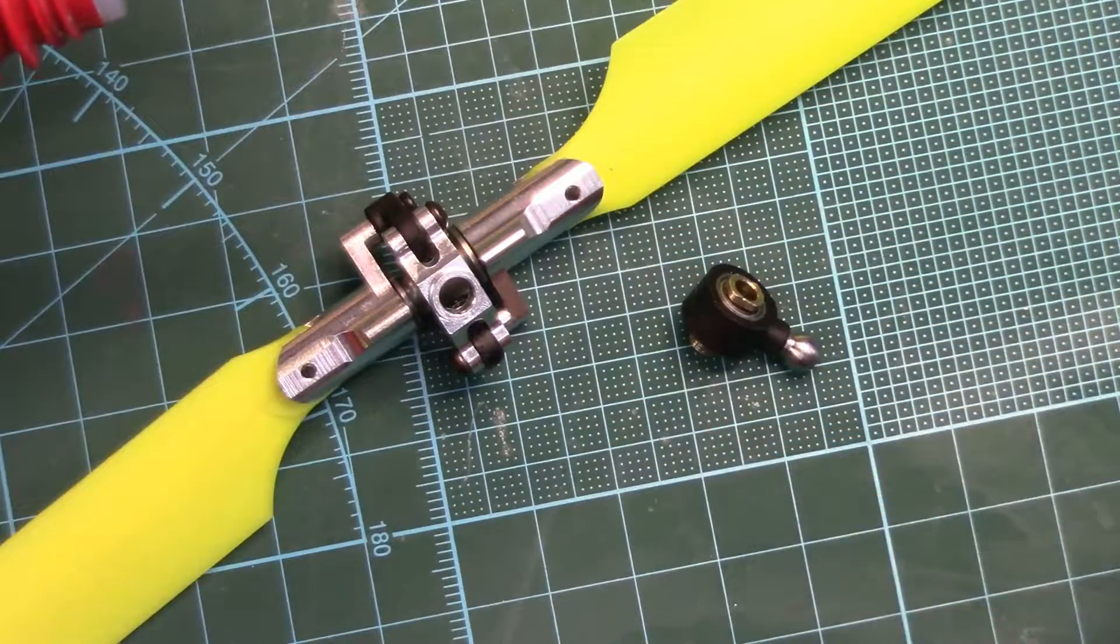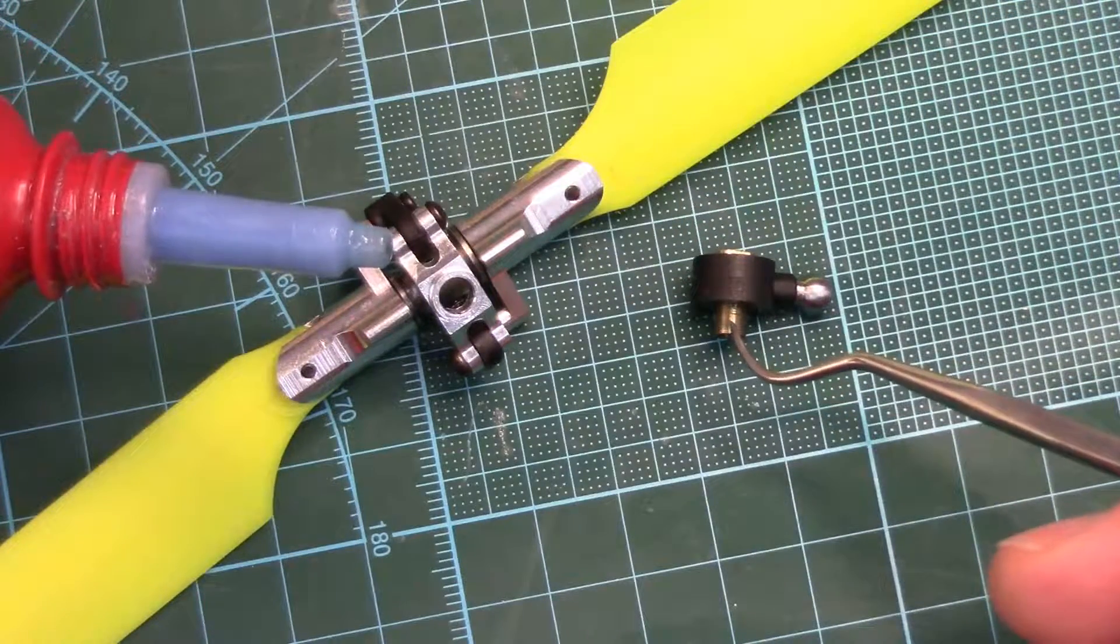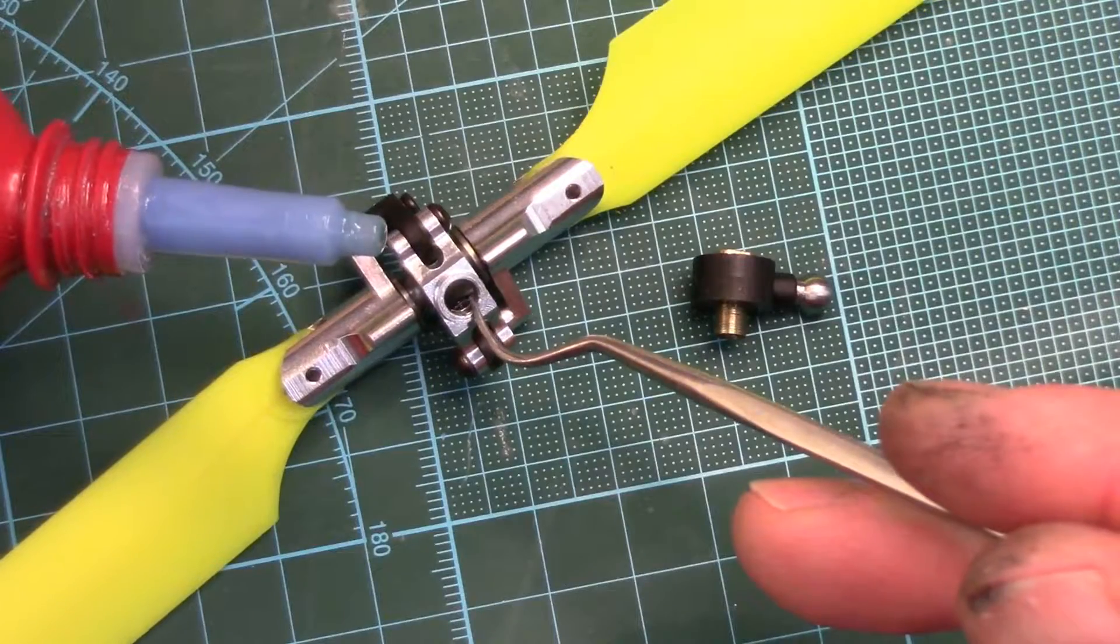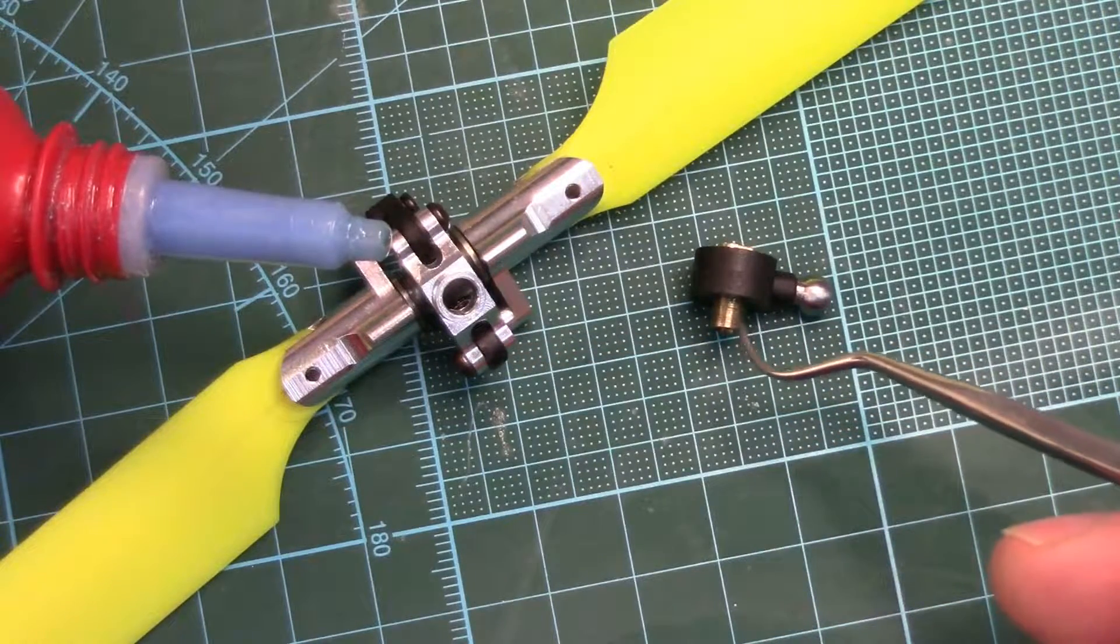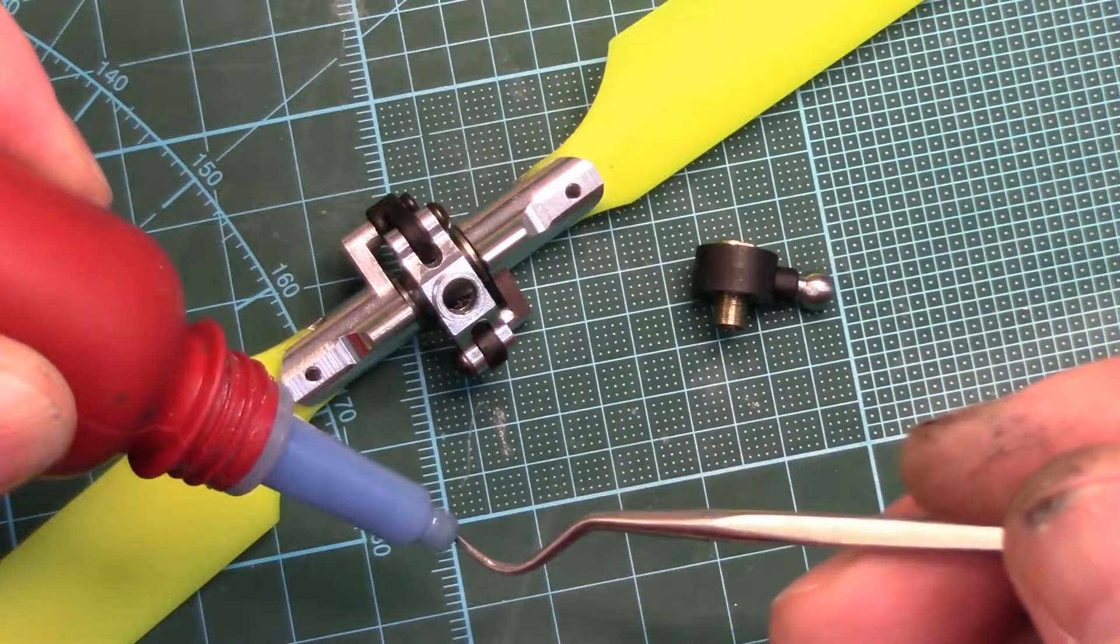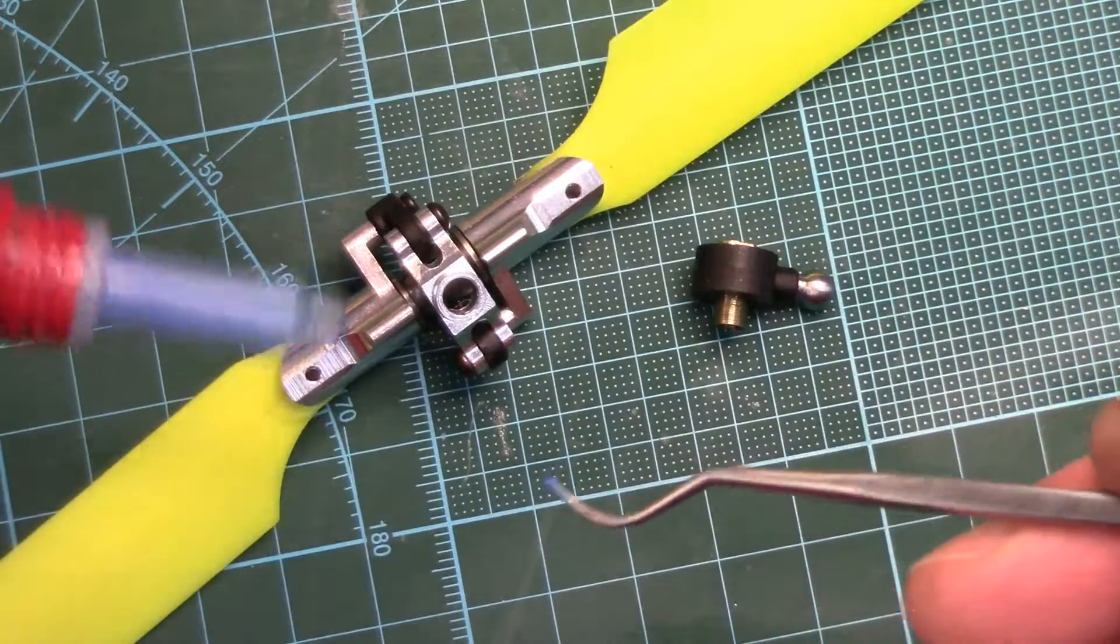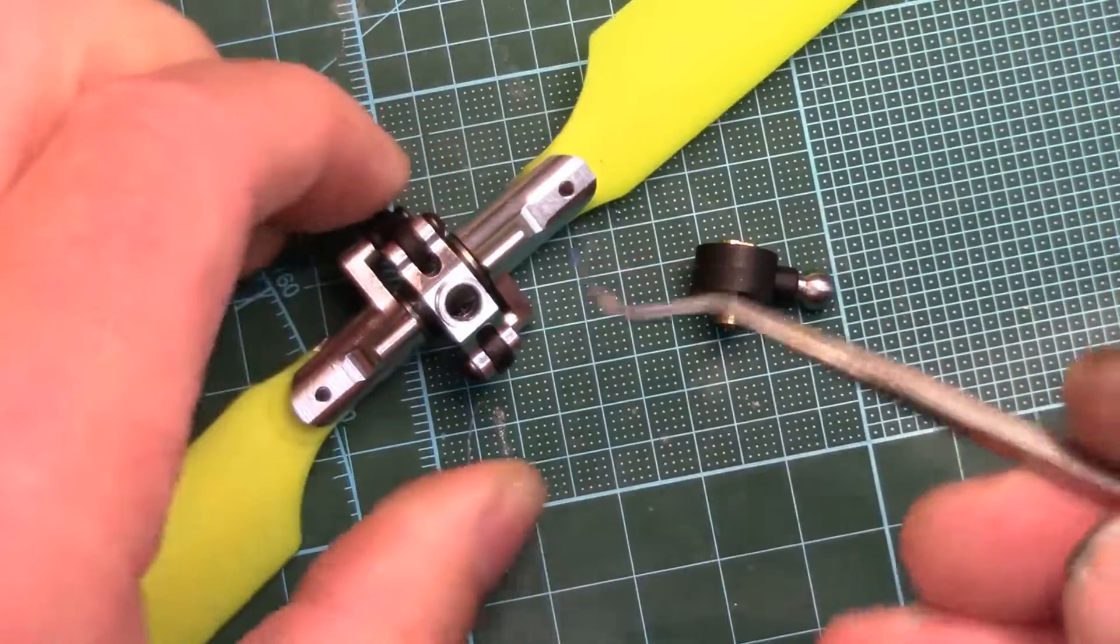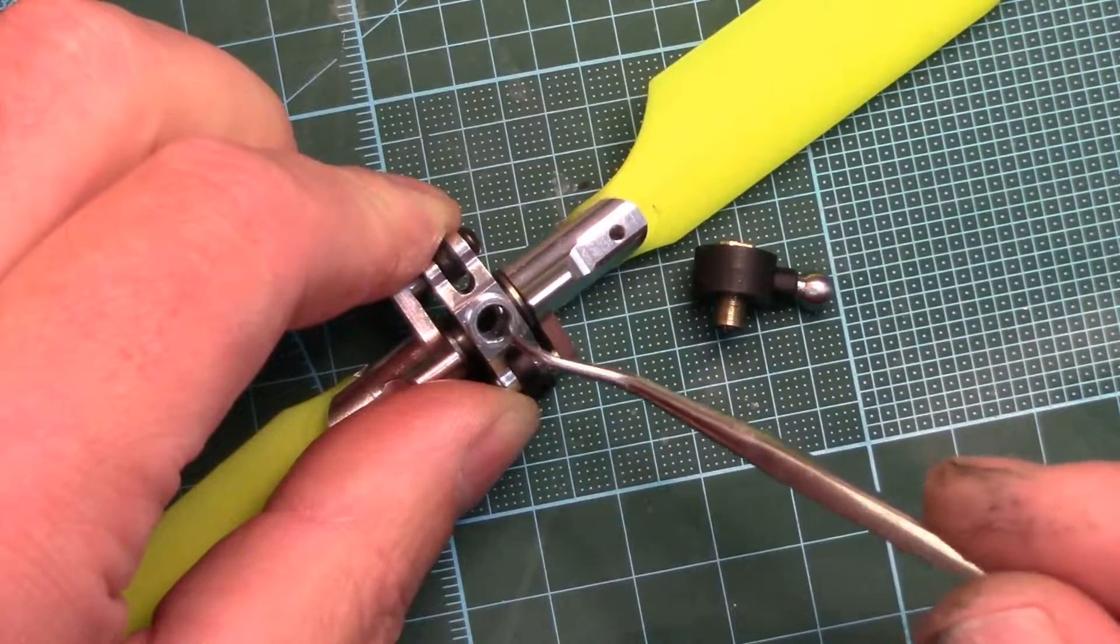I don't want to apply it to the threads on the slide shaft here because as I screw it into the t-arm, some of that Loctite, if I put too much on, you risk it oozing into the bearing. So I'm going to put it in the t-arm. I'm just going to put a little bit on this dental tool and I'll just smear it around the inside of the threads here in the t-arm.